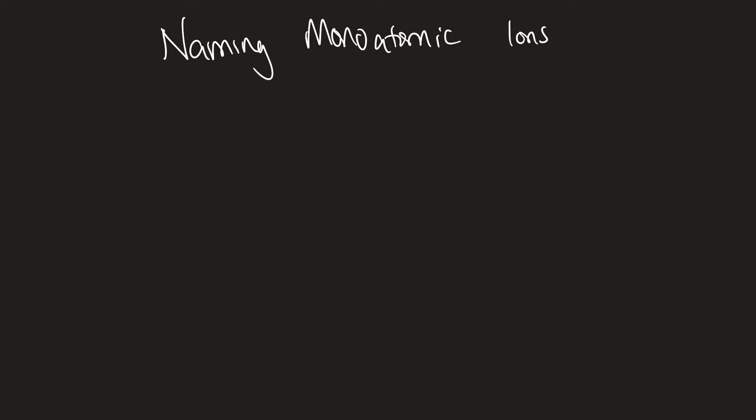In this video, we're going to talk about naming monatomic ions. Let's just jump into it — it's actually a pretty simple concept. Mono simply means one, so we're just looking at a single ion and how we name them.